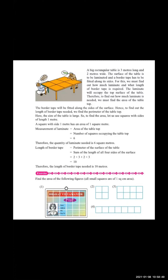The quantity of laminate needed is six square meters. Now your formula is the length of the border tape. You want to count the length — how will you count it? You find the perimeter of the surface of the table. First of all, you want to find out the perimeter — the table has four sides, and you want to count all four sides.